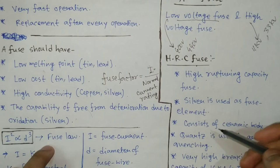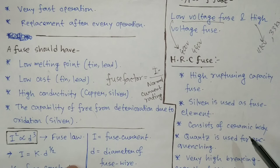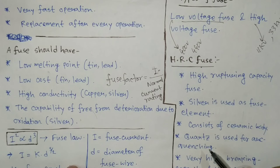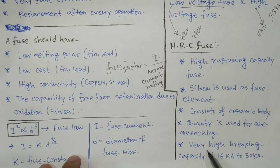It consists of ceramic body. Quartz is normally used as the arc quenching medium. Whenever the arc takes place during melting or disconnecting, that arc can be quenched using the quartz. Why HRC fuse is so much popular and widely used is because it has very high breaking capacity.